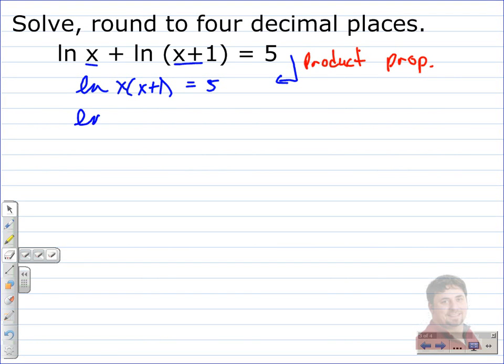From here, we're just going to simplify, distribute this x. So that will give us x squared plus x in parentheses, being equal to 5. So all we did from here to here was simplify the equation.